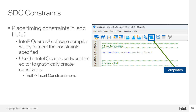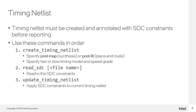After creating SDC files for your design, you'll need to create a timing netlist and annotate it with SDC commands before running timing reports. To do this, run three TCL commands from the STA TCL package. The create_timing_netlist command creates a netlist with the desired delays — you can specify post-synthesis or post-fit netlist, and optionally specify the timing model and speed grade. Next, run read_sdc to read in the SDC file; with no filename argument it reads all SDC files associated with the project. Lastly, update_timing_netlist annotates the netlist with the SDC constraints and generates warnings such as undefined clocks or combinatorial loops.